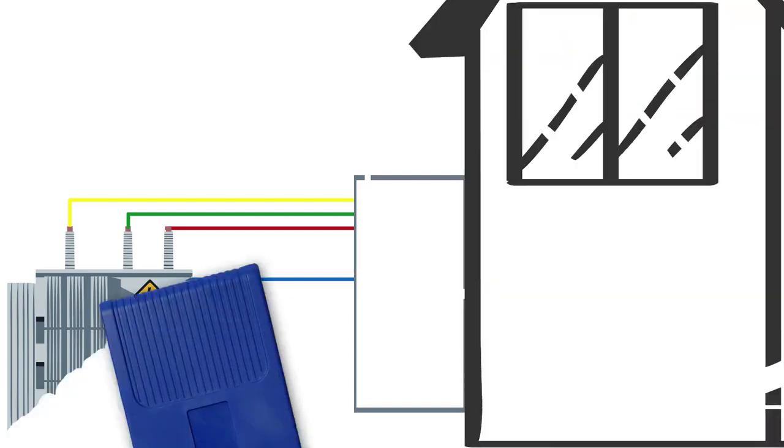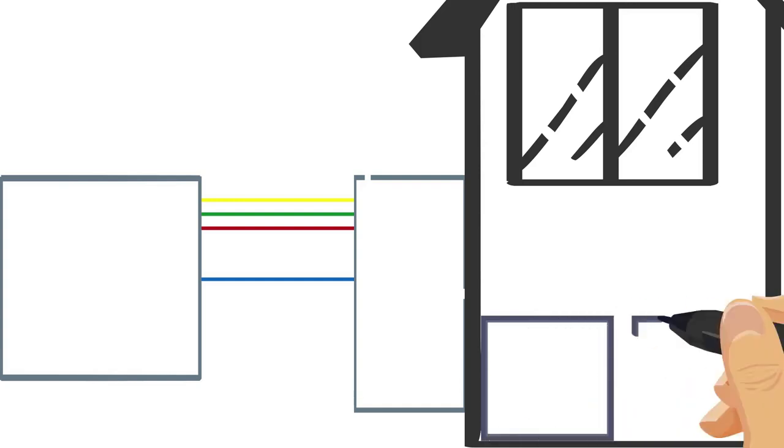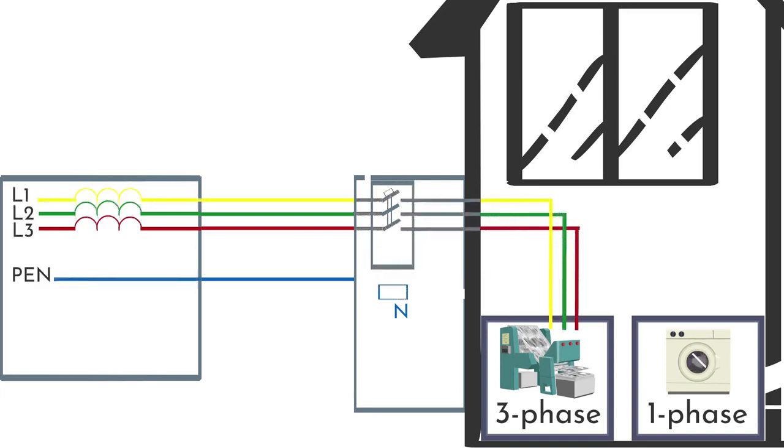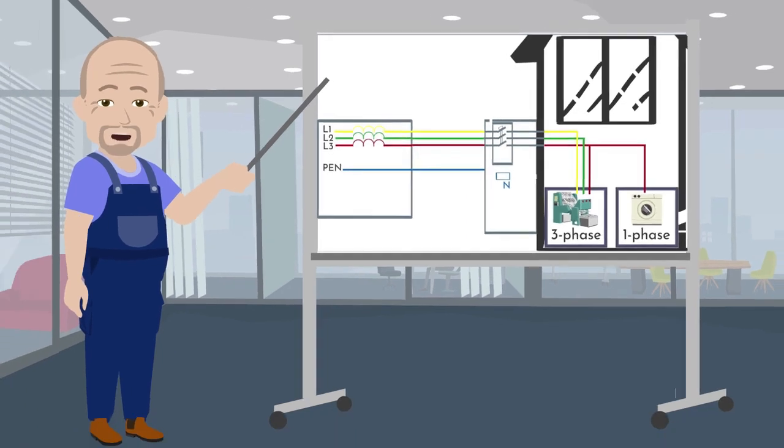The conductors coming from the transformer substation equipment are connected to the bus. The domestic circuit will include a three-phase and a single-phase consumer. These three-phase conductors are connected to the three-phase consumer by means of the automatic circuit breaker. Only one phase conductor is connected to a single-phase consumer. Now, let's see how three-phase and single-phase consumers are grounded in different grounding systems.